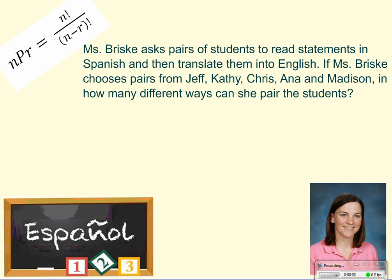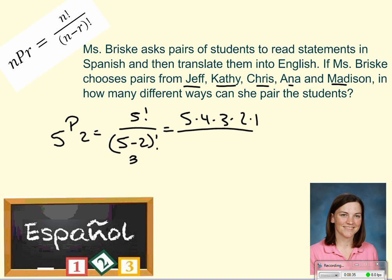Ms. Brisky asks pairs of students to read statements in Spanish and then translate them into English. If Ms. Brisky chooses pairs from Jeff, Kathy, Chris, Anna, and Madison, how many different ways can she pair the students? So, that's 5 kids. She's got to pair them. So, that's going to be 5, choose 2. That means it's going to be 5 factorial over 5 minus 2 factorial. So, 5, 4, 3, 2, 1 over 3, 2, 1. Cancel, cancel, cancel. 20 different ways she can do it. I'm hoping that this is making sense to you. If not, go back and re-watch this and see if it makes sense.